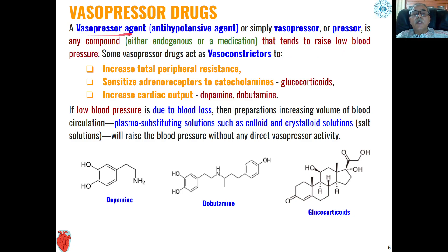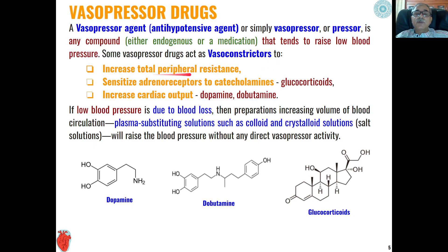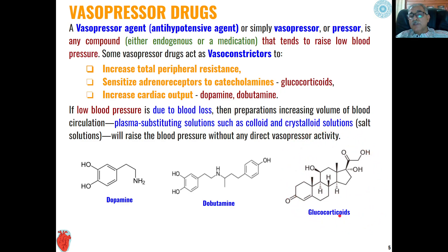These compounds may be exogenous or endogenous. Vasopressor drugs act as vasoconstrictors to increase total peripheral resistance in the body, and they also sensitize adrenoreceptors to catecholamines.